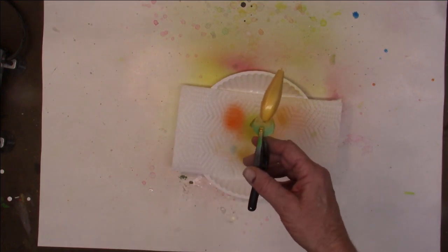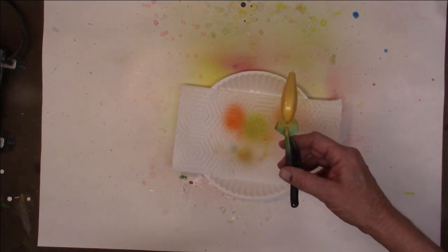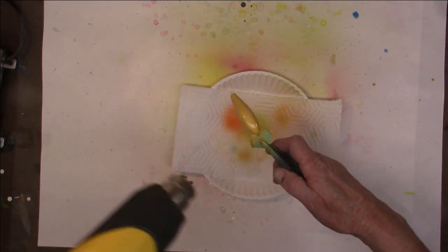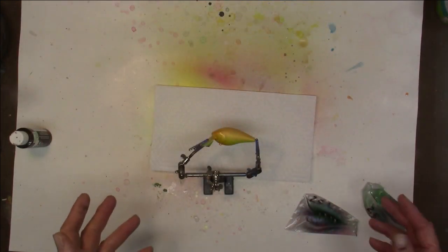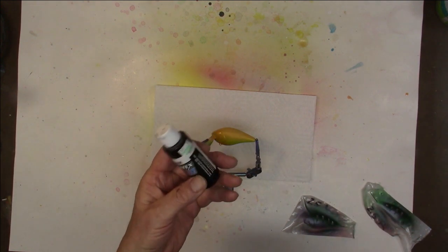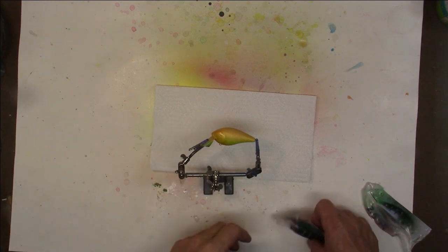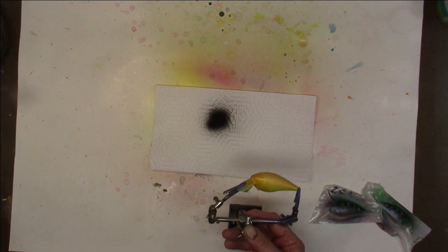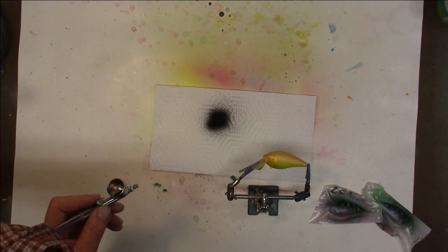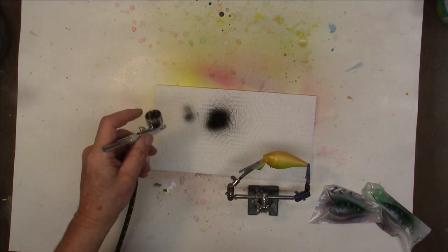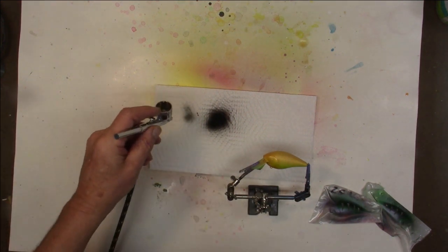So we'll get the heat gun, get it dried, and then we'll see about a stencil. All right, here we go with our stencil. For the stencil color we're going to go Createx opaque black. We'll put that in here for the background. Let's hit this quick. You know what, we're going to take that air pressure way down.